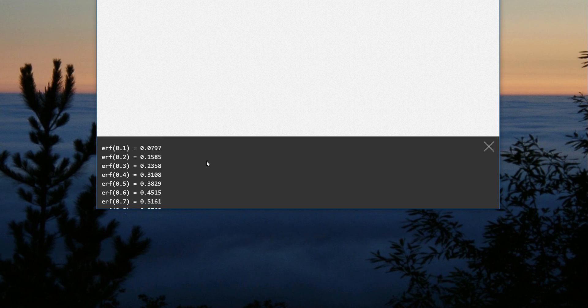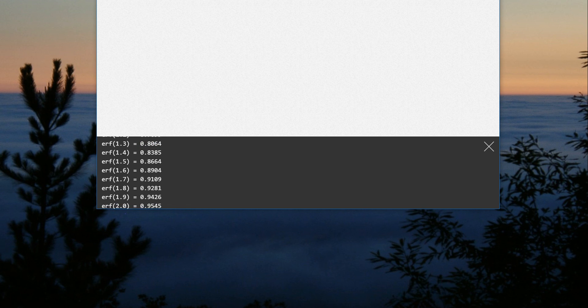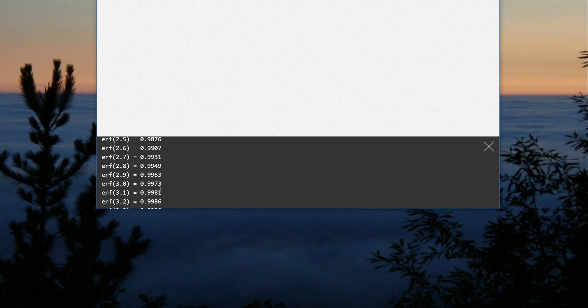You see all these different numbers. So we have ones that we are familiar with, like ERF of 1.0 is 0.6827. That's the area or the fraction of data within one standard deviation. You have ERF of 2.0 here, which is fraction of data within two standard deviations, 0.95, 95%. Within three standard deviations is 0.9973.